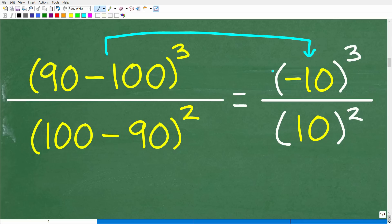Okay, so this is going to be parentheses negative 10 cubed. All right, so let's go ahead and handle what's inside the parentheses down here. So we have 100 minus 90 squared. Okay, so 100 minus 90, this is going to be 10 parentheses squared.